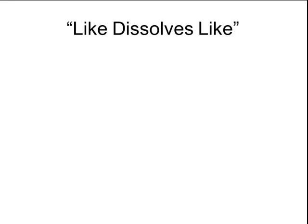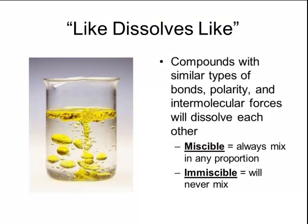The rule 'like dissolves like' allows us to make predictions about whether two substances will be able to dissolve in each other. Compounds that have similar types of bonds, polarity, or intermolecular forces will dissolve in each other — these substances are known as miscible, meaning they'll always mix regardless of how much you use. Substances with different types of bonds, different polarity, or different strengths of intermolecular forces will not dissolve in each other, and these are known as immiscible. Oil and water are immiscible because oil is a nonpolar substance with weak London dispersion forces, and water is a polar substance with very strong hydrogen bonding. Because the London dispersion forces are not strong enough to overcome the hydrogen bonding, the two substances will never mix.